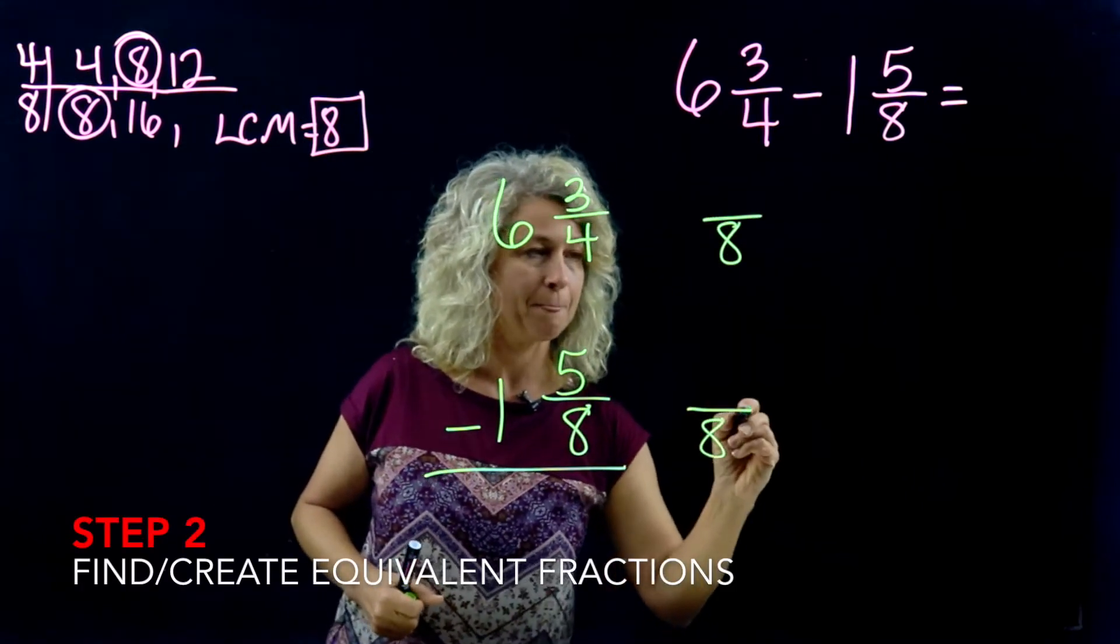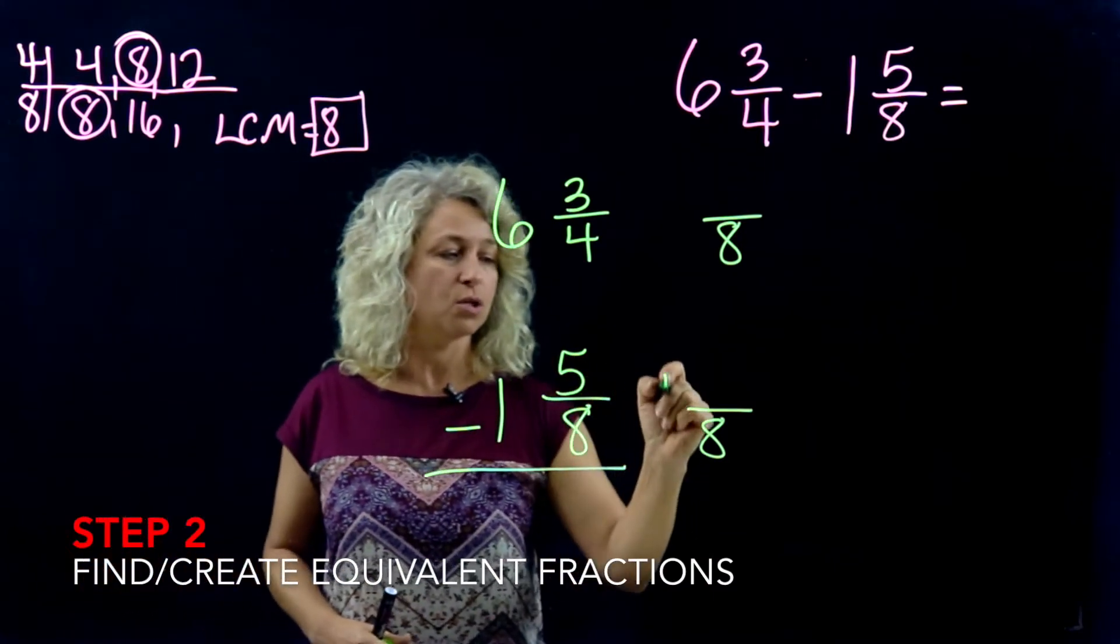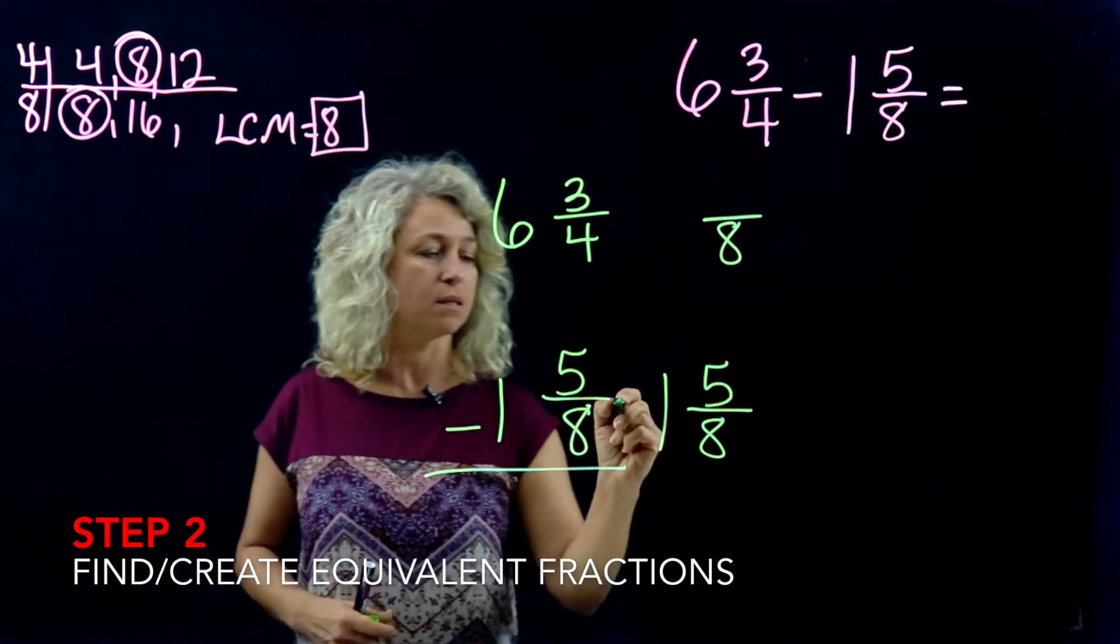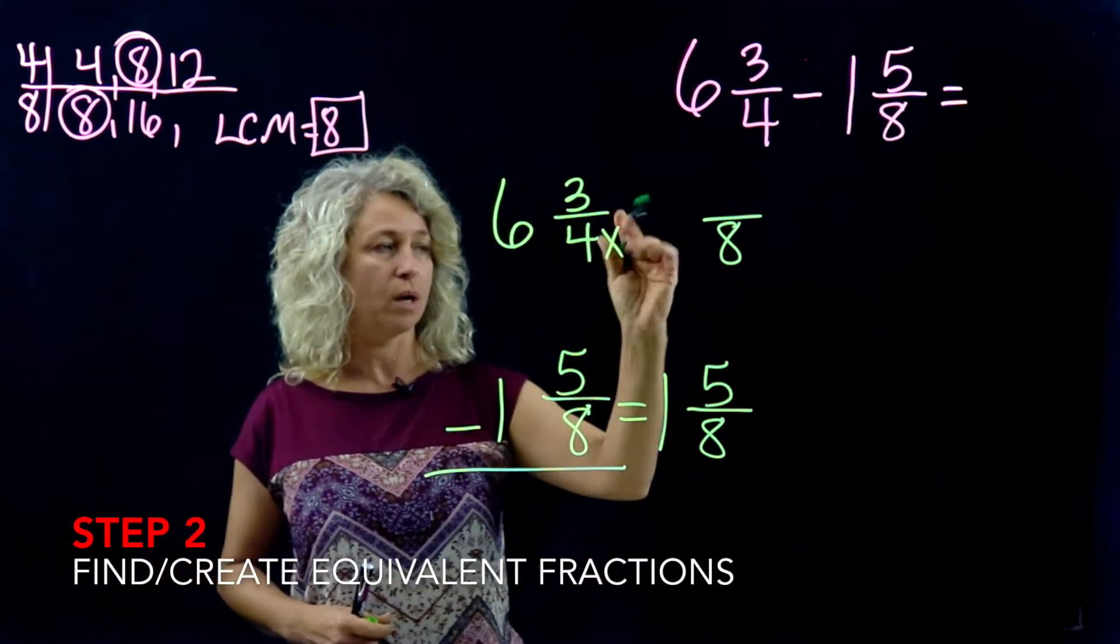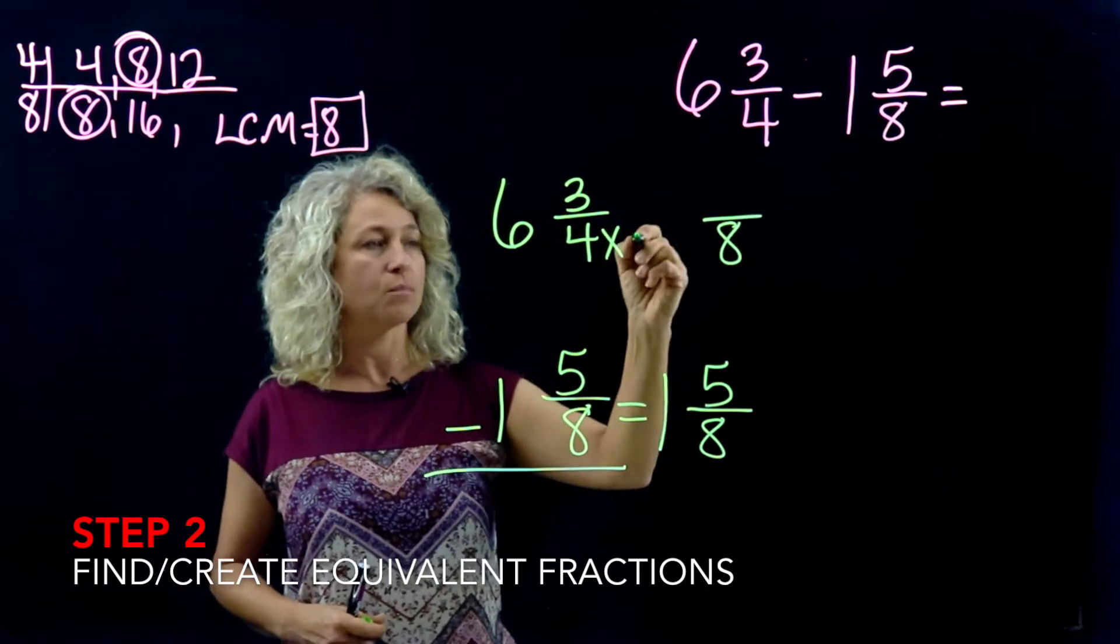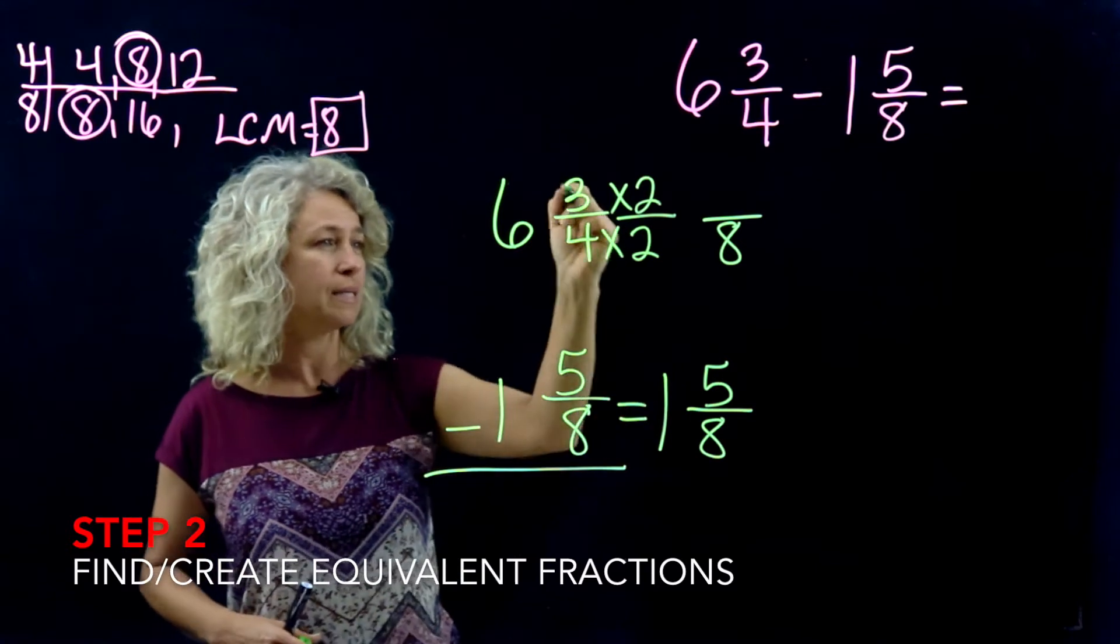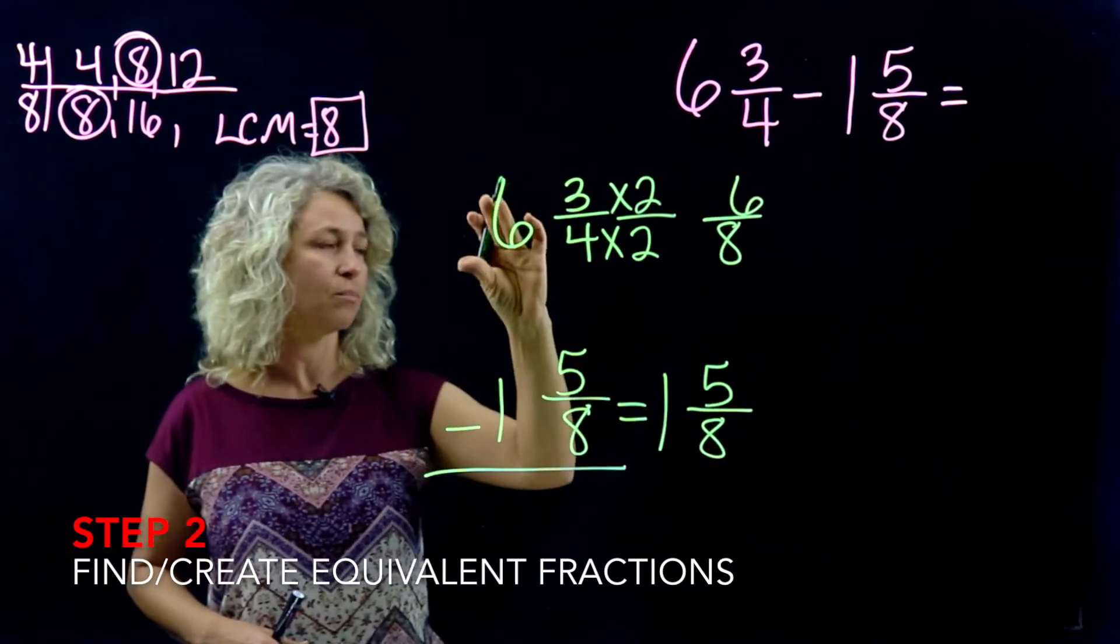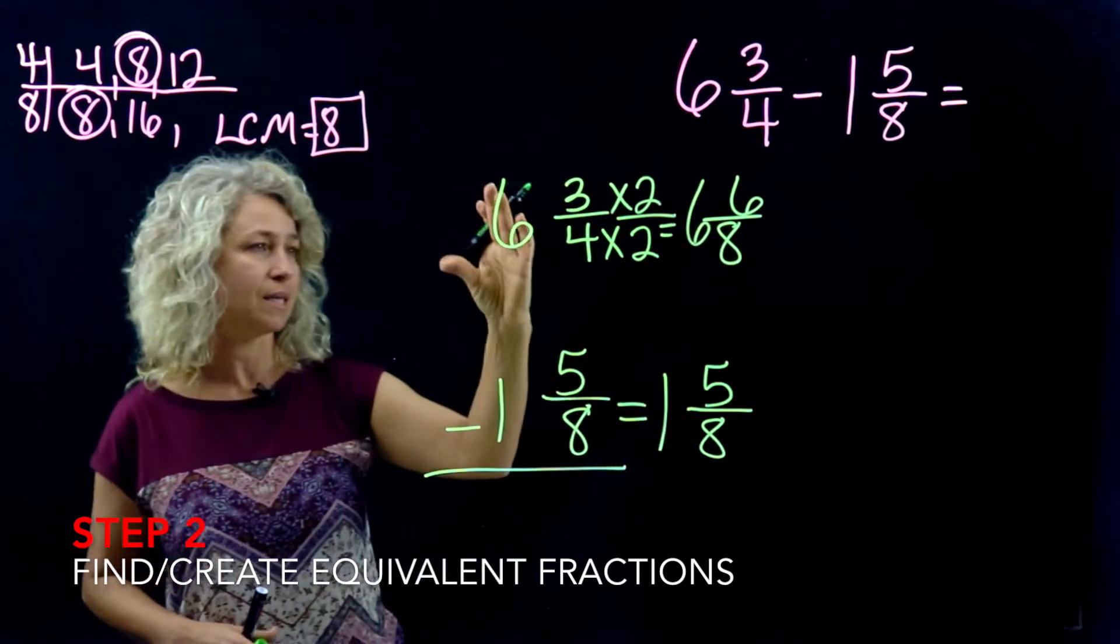Don't you love it when the denominator is already the same? You can just bring it over because anything times one is the same number. Four times what is eight? Four times two. So do the same to the numerator: times two. Three times two is six. Bring the whole number six over. So now we know that 6 3/4 means 6 6/8.